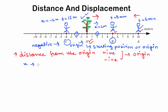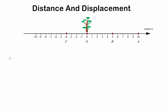Here this quantity x is called the position of the body. Now that we know how to describe the position of a particle or a body moving along a straight line at a given time, we will now learn about distance and displacement. In our day-to-day language, we use the terms distance and displacement interchangeably. But in physics, both terms have different meanings.